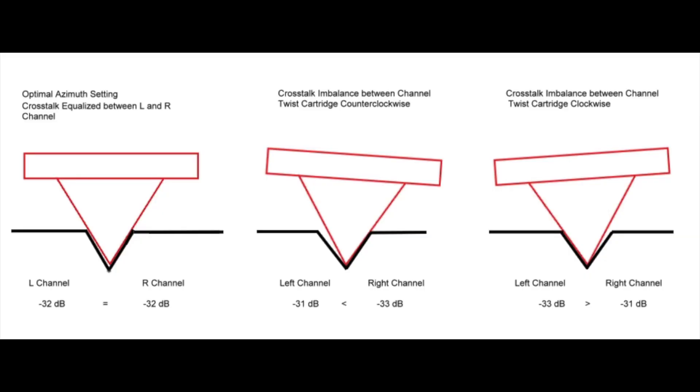On this diagram, you will see exactly what we are trying to achieve with setting azimuth. On the left, you have the stylus sitting perfectly in the record grooves. When the azimuth is set incorrectly, such as in the middle and on the right diagram, notice how the stylus is tilted slightly to the left or the right.